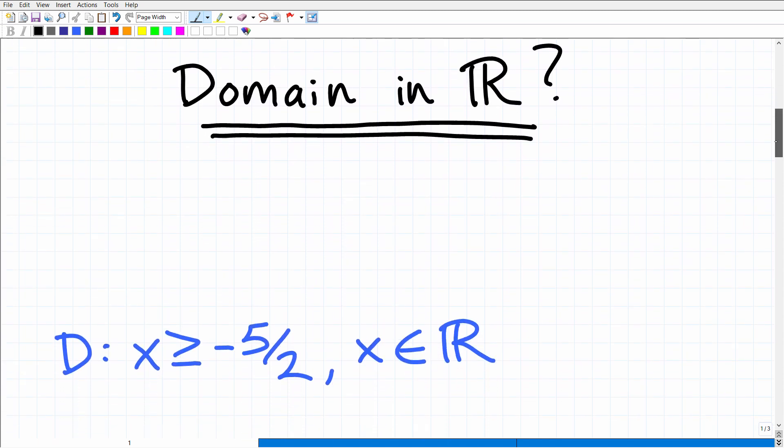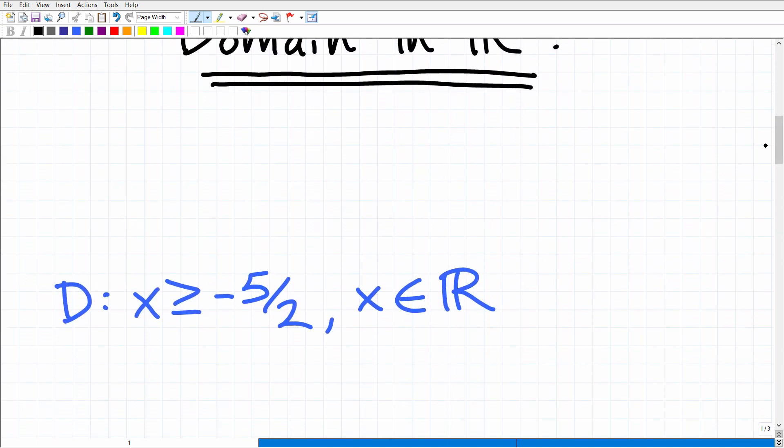So the domain would be something along these lines. X is greater than or equal to negative 5 halves, where X is an element of the real numbers. X is part of the real number system. Now, if you didn't express your answer this way, you may have expressed it maybe something like this.